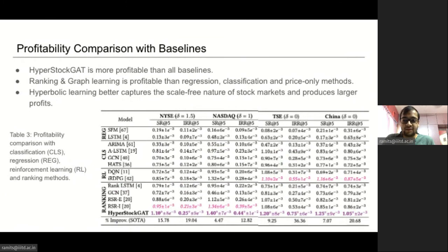We compare HyperStock GAT with state-of-the-art methods of varying formulations in terms of profitability. We observe that HyperStock GAT consistently generates significantly larger risk-adjusted returns than all baselines across all markets. Generally, ranking and RL methods that are inherently optimized for higher returns are more profitable than classification and regression methods. Amongst the best-performing ranking and RL models, those that model inter-stock dependence outperform price-only methods. HyperStock GAT achieves an average of 9% more risk-adjusted returns compared to the best baselines for markets with high hyperbolicity, suggesting that graph networks significantly benefit from hyperbolic geometry, especially in stock markets which exhibit scale-free nature.